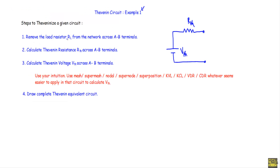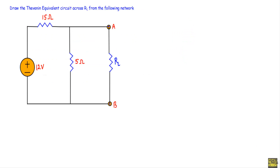Step one: remove the load resistor RL from the network across the A-B terminals. I have removed the load resistor RL and placed it across the A and B terminals. After removing RL from the circuit, our circuit will look like this and the A and B terminals will be open circuit.